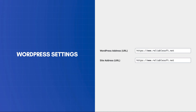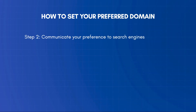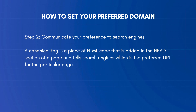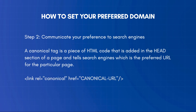The second step is to communicate your preference to search engines. The way to do this is through the canonical tag. A canonical tag is a piece of HTML code that is added in the head section of a page and tells search engines which is the preferred URL for that particular page. The value of the canonical tag should be in the same format as your preferred domain, with or without the www.